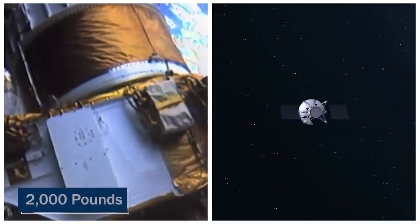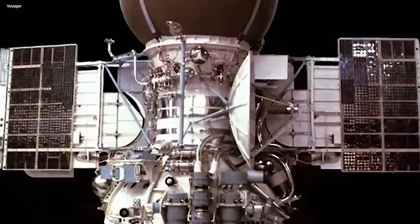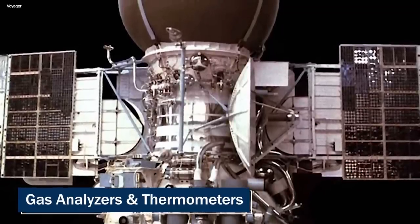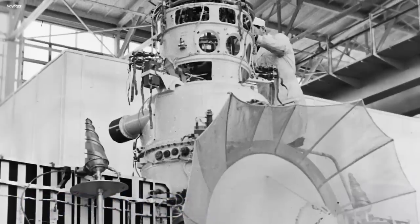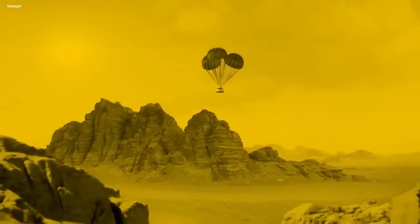The newer probes weighed about 2,000 pounds and carried equipment and a detachable pod known as a descent module. The descent module was outfitted with a second set of instrumentation, such as a barometer, radar altimeter, gas analyzers, and thermometers, allowing them to collect as much data as possible, even if they were to just survive for a few minutes once they landed.